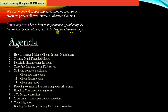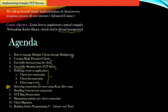The course agenda includes: how to manage multiple clients through multiplexing — that is, all clients connected to your TCP server. You will also learn how to create a multi-threaded client, how a TCP server can forcefully disconnect a connected client, and how to shut down a TCP server gracefully. Additionally, the socket library will notify an application about new client connections, existing client disconnections, or whenever the TCP server receives a message from a connected client.